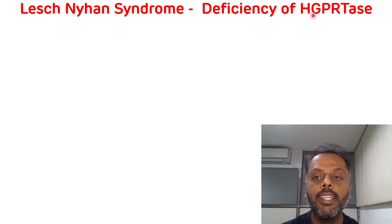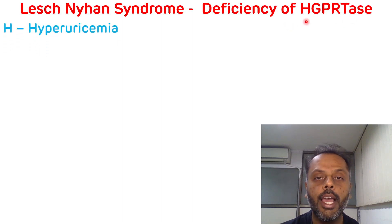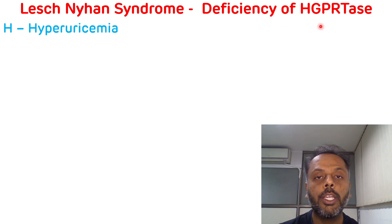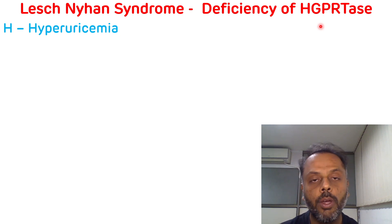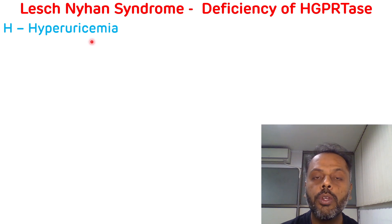In HGPRT, H stands for hyperuricemia. In Lesch-Nyhan Syndrome, due to the deficiency of the HGPRT enzyme, there is accumulation of purines and more degradation of purines, which leads to hyperuricemia. This hyperuricemia will then lead to gout.